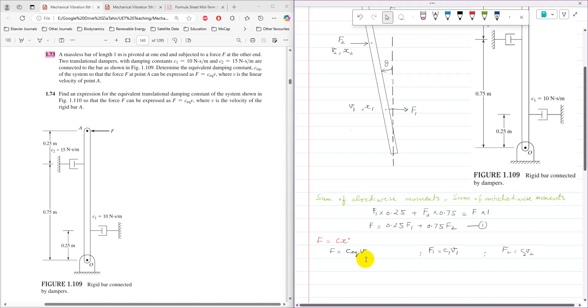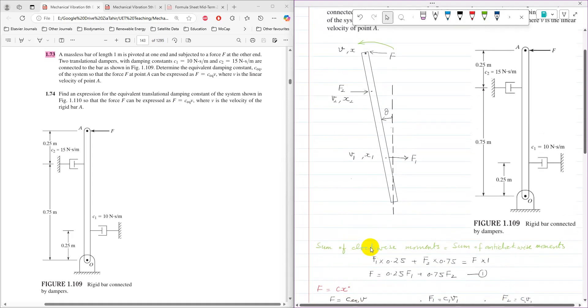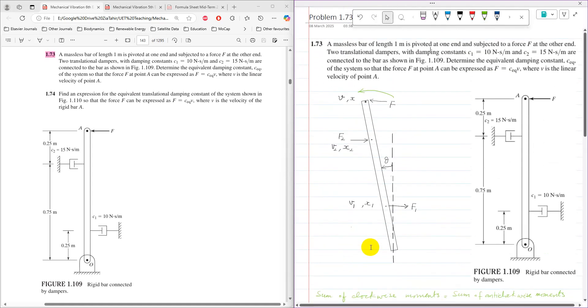We need to write velocities V1 and V2 in terms of V. We can use the expression S equals R theta for small angles. For small angles, arc length equals chord length.